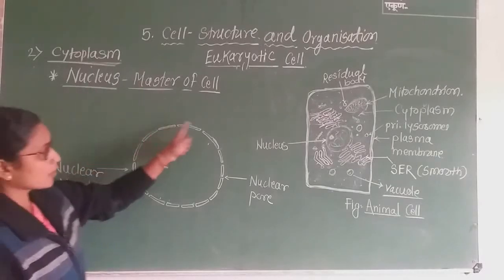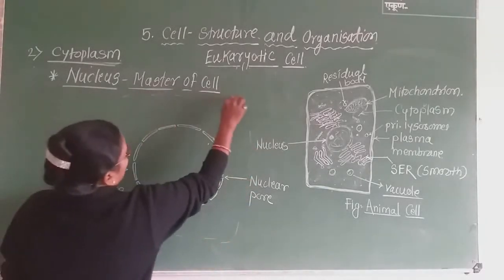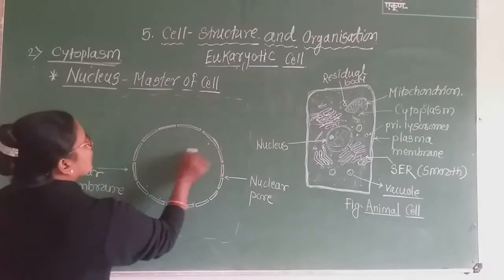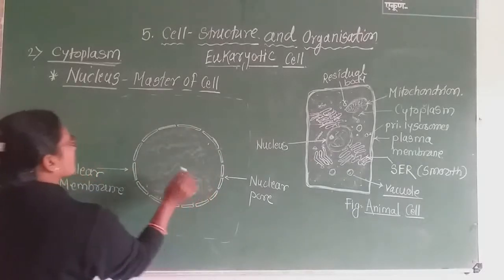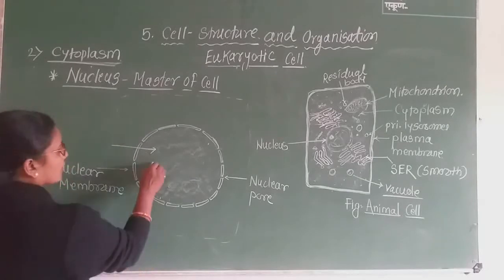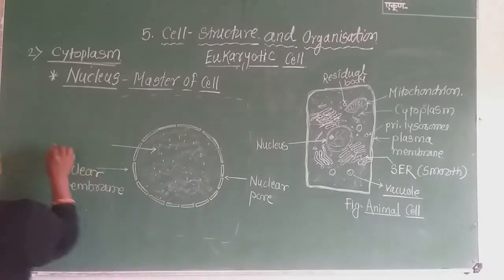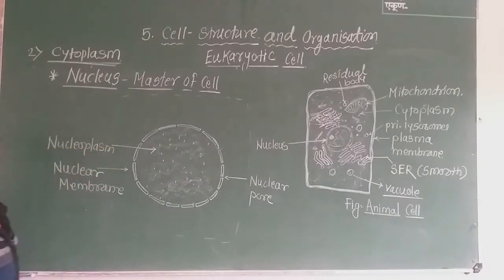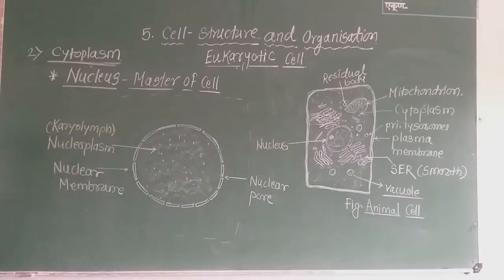Outside this nuclear membrane there is the cytoplasm of the cell. Now inside the nuclear membrane, there is also a presence of cytoplasm, but this cytoplasm belongs to the nucleus. Hence it is called as nucleoplasm, or it is also called as karyolymph.